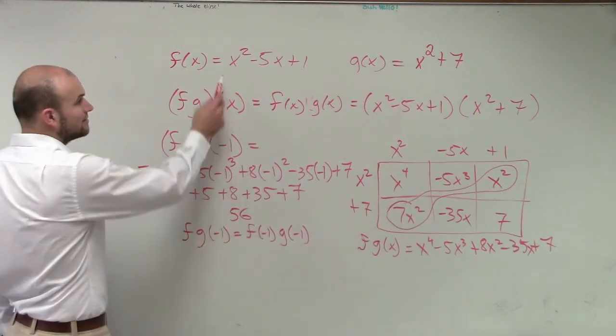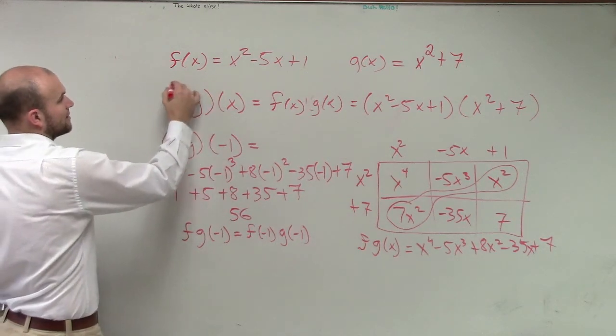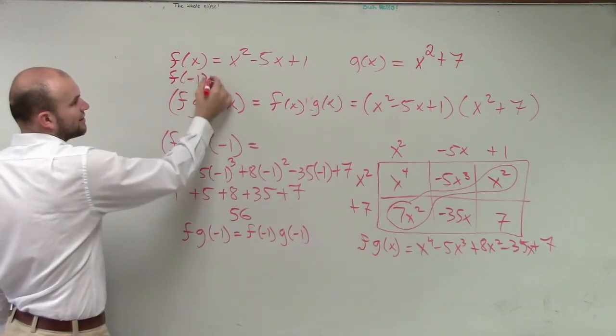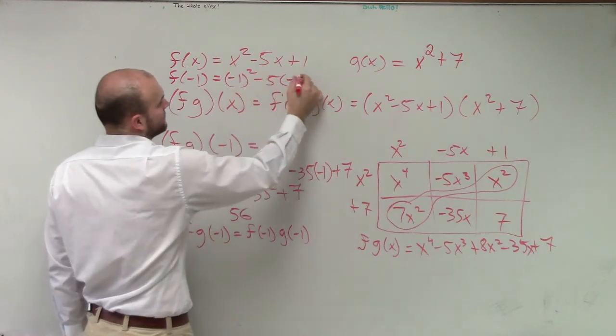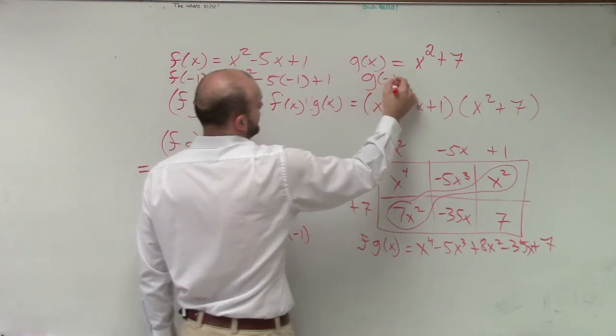Now if I want to do f of negative 1, what do I need to find f of negative 1 as what? Just plug in negative 1 in from there, right? So negative 1 squared minus 5 times negative 1 plus 1. And then I need to do g of negative 1.